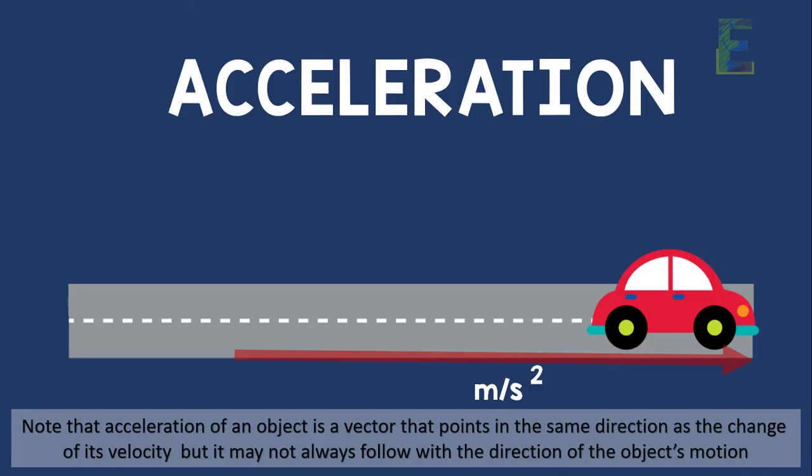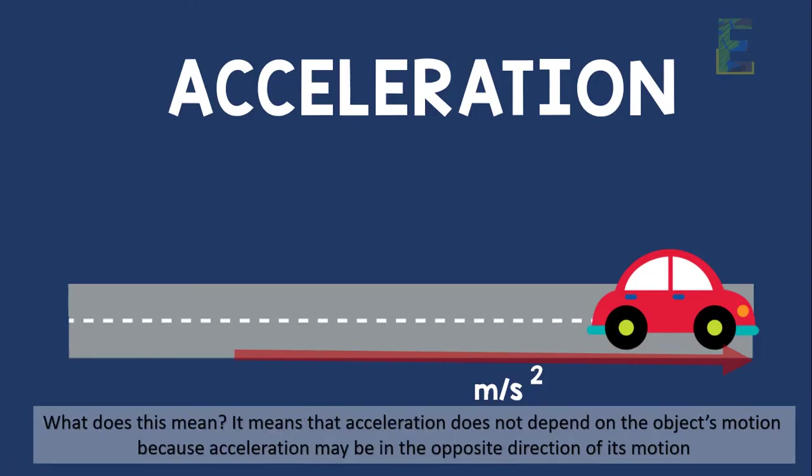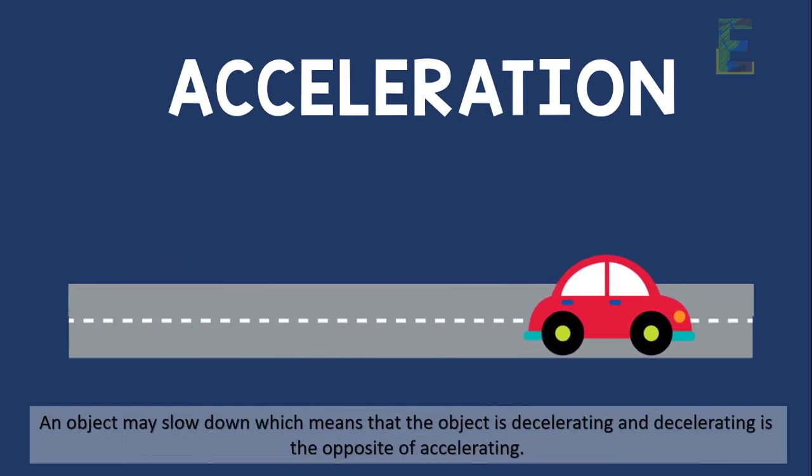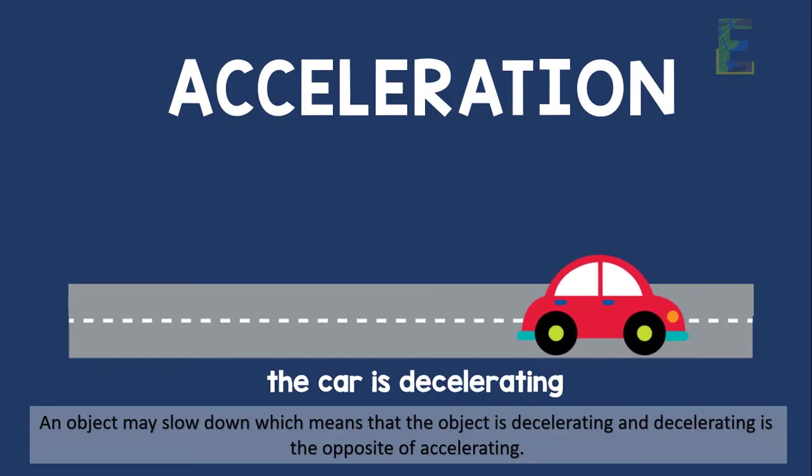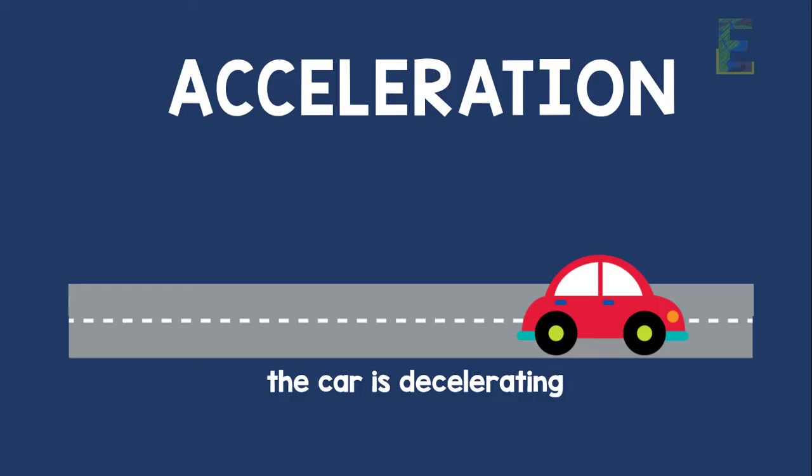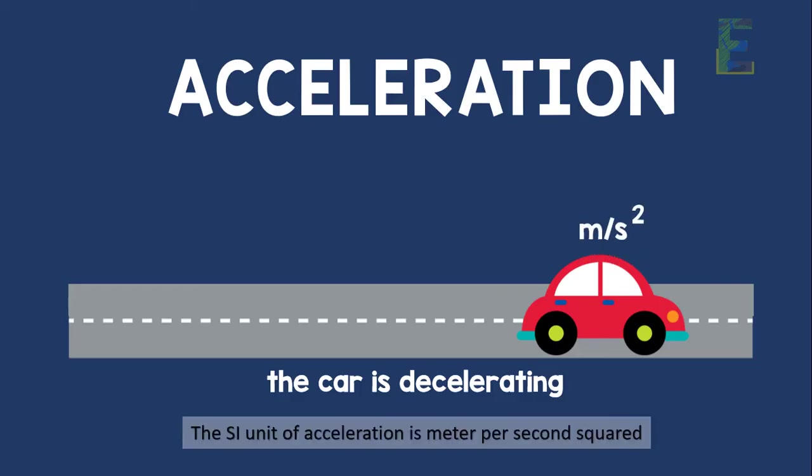Note that acceleration of an object is a vector that points in the same direction as the change of its velocity. But it may not always follow with the direction of the object's motion. What does this mean? It means that acceleration does not depend on the object's motion because acceleration may be in the opposite direction of its motion. An object may slow down, which means that the object is decelerating and decelerating is the opposite of accelerating. The SI unit of acceleration is meter per second squared.